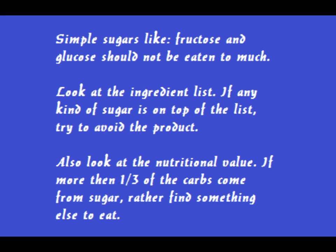Here are some extra tips to help you choose the right product in your diet or for a snack. Simple sugars like fructose and glucose shouldn't be eaten too much — about one third can be simple sugar, and the rest should be complex sugars like starch. On an ingredient list, if sugars appear at the top, that means sugar is the most used ingredient. Also look at the nutritional value — if more than one third of the carbs come from sugar, try to find another product.